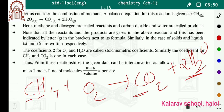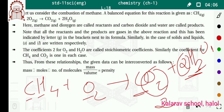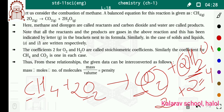Ab last mein kya bacha hai? Oxygen. At the reactant side, oxygen kitnay hain? Only two oxygen. Aur product side mein, CO2 mein two oxygen aur H2O mein two oxygen — toh two plus two, total oxygen kitnay ho gaye? Four. Toh reactant side mein bhi number of oxygen four hone chahiye. Two O2 pehle se hai, toh use two se multiply karenge — two times two equals four. Toh oxygen bhi balance ho gaya.